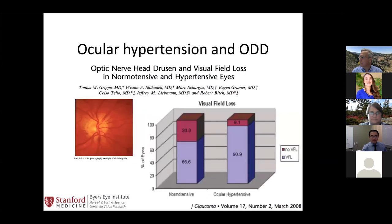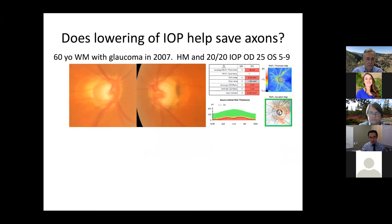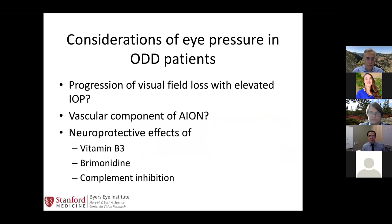What do I tell the patient sitting in my chair who has optic nerve drusen and a progressive field loss? A lot of the consideration has to do with the timing of progression — how fast does progression of visual field loss occur in patients with ODD? Whether there's a vascular component or AION causing vision loss, or whether it's glaucoma causing the visual loss.